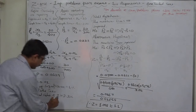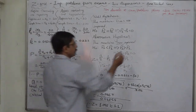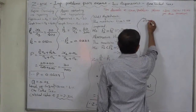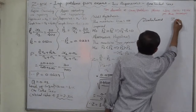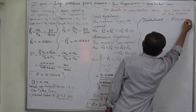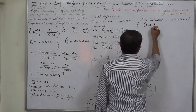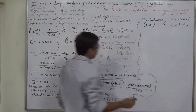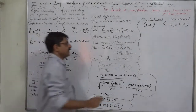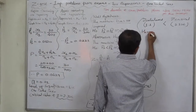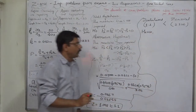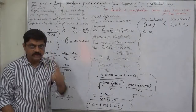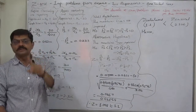We now have the critical value and the calculated value of Z. Comparing them: Z_calculated = 1.1 and Z_critical = 2.326. Since Z_calculated is less than Z_critical, if the calculated value of the test statistic is less than the critical value, the null hypothesis is not rejected — it is accepted.